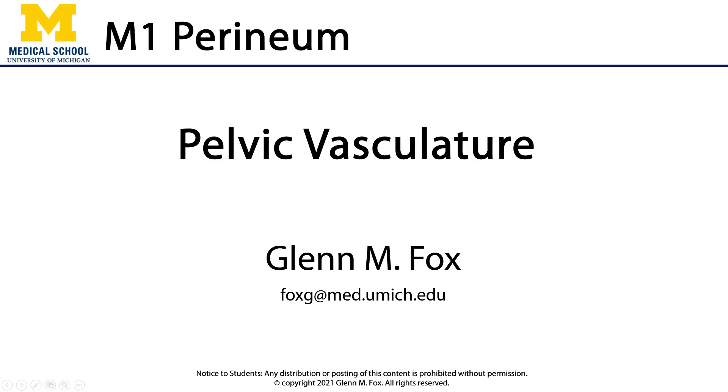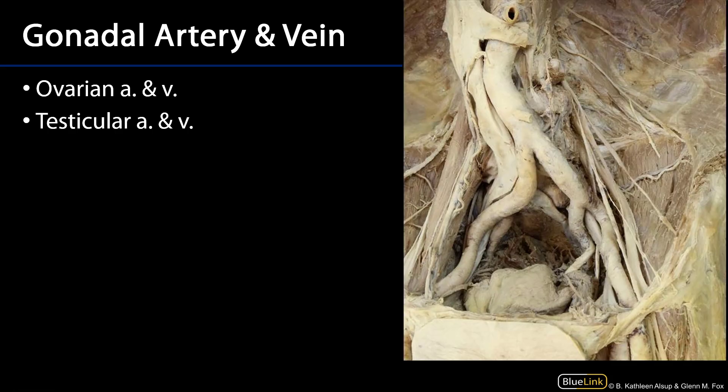Let's talk about the pelvic vasculature. The gonads are supplied with blood by the gonadal arteries and drained by the gonadal veins. While the gonads are either within the pelvic cavity in the case of ovaries, or in the scrotum as part of the perineum in the case of testes, one might think a priori that the blood supply comes from within the pelvis — but actually these sources are within the abdominal cavity.